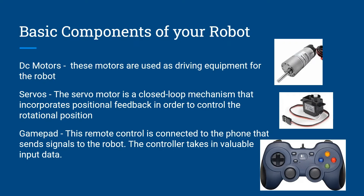There are a couple of basic components of your robot that you need to know before starting to code, such as a DC motor, which is shown on the right. These motors are used as driving equipment for the robot. Servos, which you can also see in the picture, are motors that can spin in a rotation, give you feedback, and allow you to control the rotation.